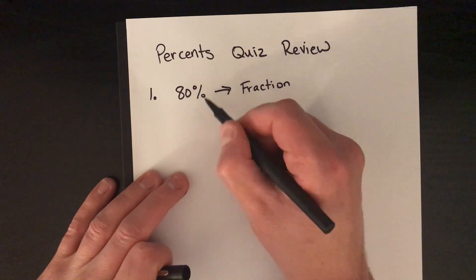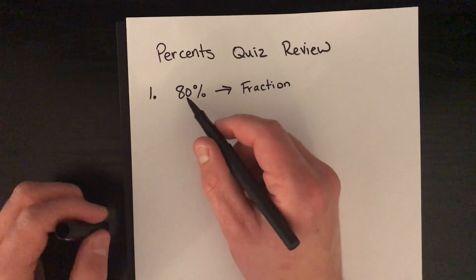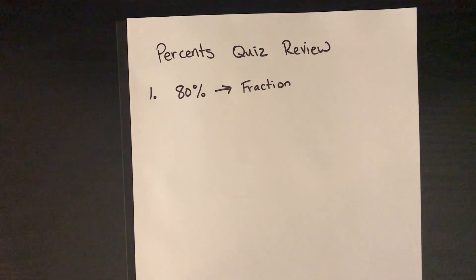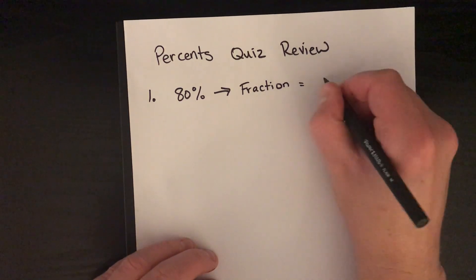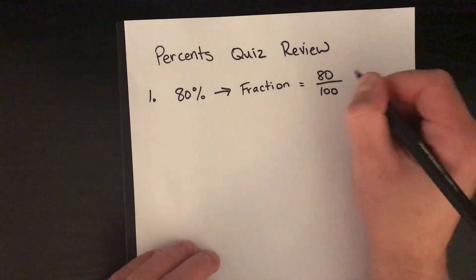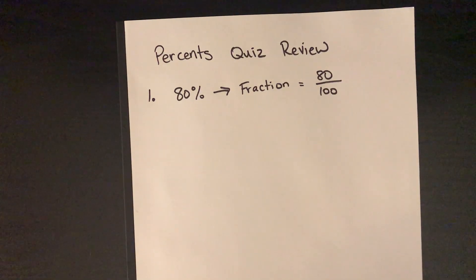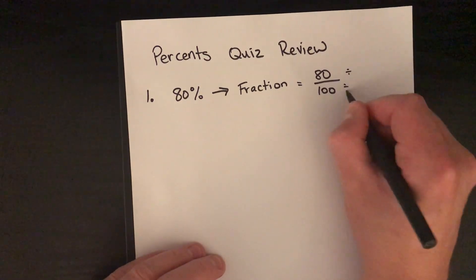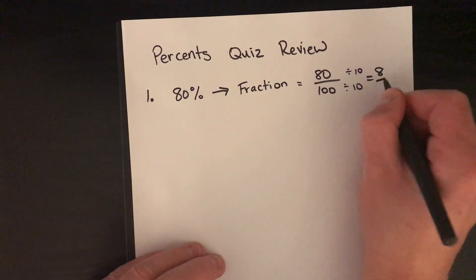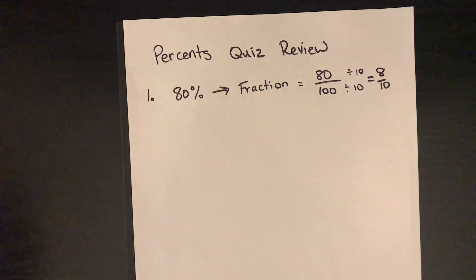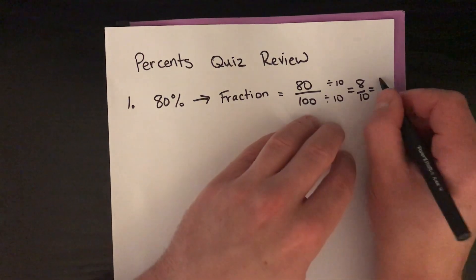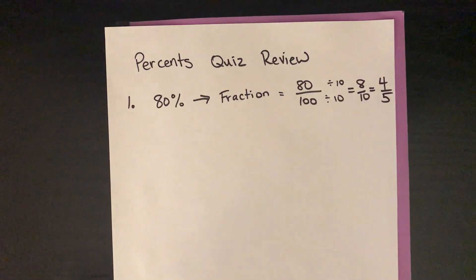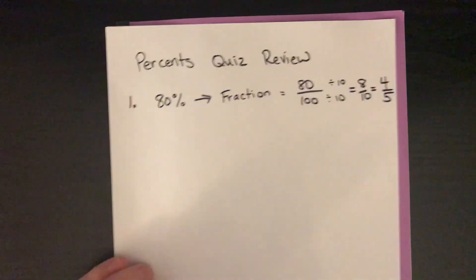The percent sign literally means divided by 100 — that's why it's a one with two zeros when you make a percent sign. So you can take any percent number and just put it over 100, giving us 80/100. We need to simplify: divide top and bottom by 10 to get 8/10, then divide by 2 to get 4/5, which is the answer.